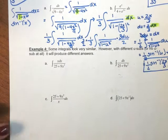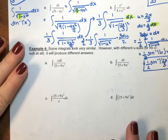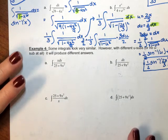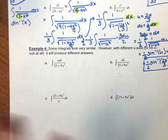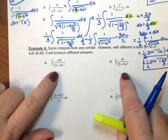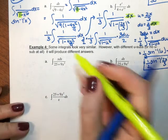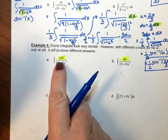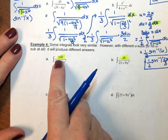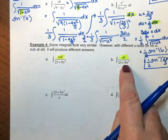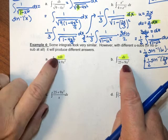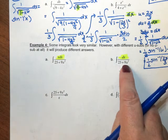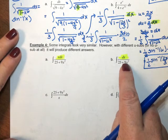On page 2, example 4, this ties in a bunch of different integration techniques. These integrals look very similar, but the way you approach them will be very different depending upon the setup. If you take a look at 4a and 4b, the only difference is that in 4a you've got the variable x in the numerator, and in 4b you do not. Because that x is in the numerator in 4a, it's going to completely change the way that you handle it versus the way you'll handle 4b.